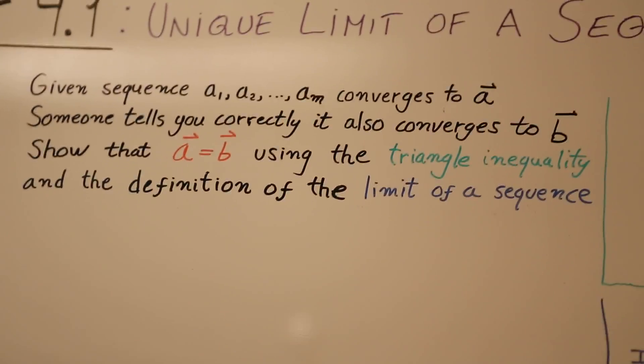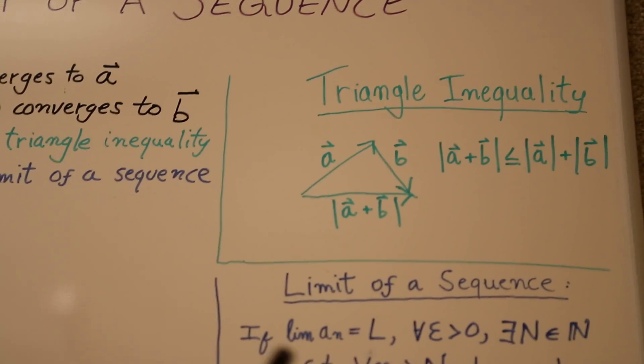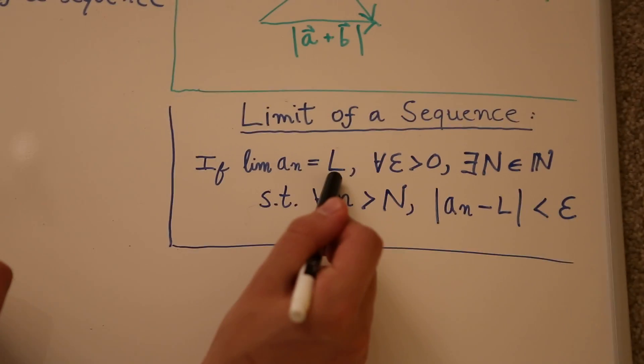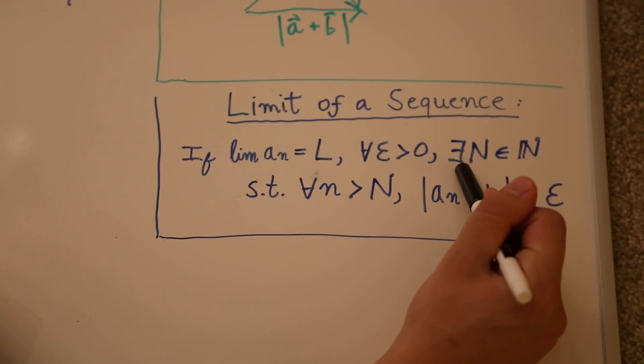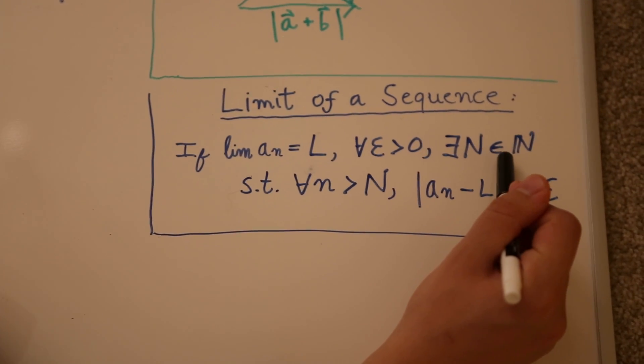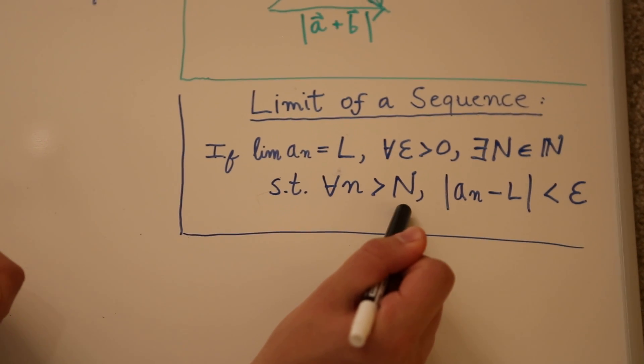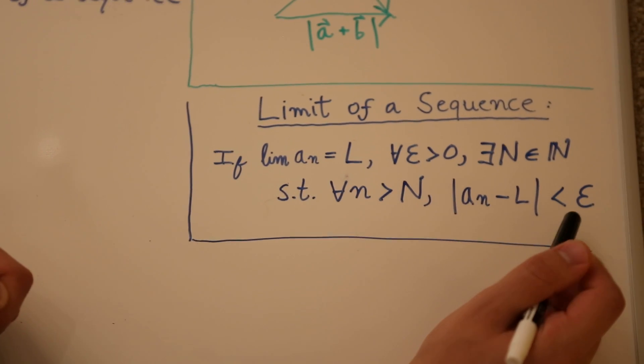Just to remind you, the triangle inequality is this, very simple, we've used it before. And the definition of the limit of a sequence is, if you have a sequence AN that converges to L, we say that for all epsilon greater than zero, there exists some big N, that is a natural number, such that for all little n greater than that N, then AN minus L is less than epsilon.